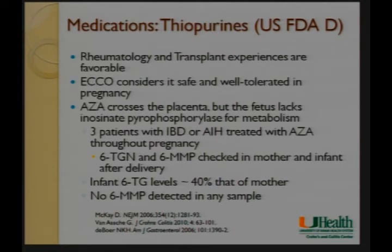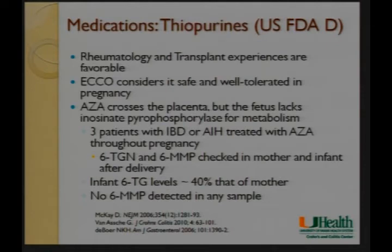Now the more controversial drugs. The thiopurines — 6MP and azathioprine — are class D, considered potentially dangerous, but for the most part if the disease requires them it is safer to use them than to withhold them. Most of our data comes not from IBD but from rheumatology and transplant experiences, and these are pretty favorable. The European Crohn's and Colitis Organization considers thiopurines safe and well tolerated by their official guidelines. Thiopurines do cross the placenta, but the fetus does not have the enzyme required for their metabolism.